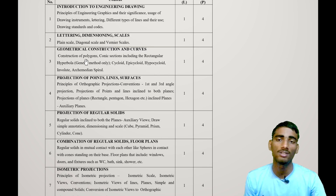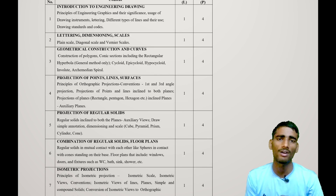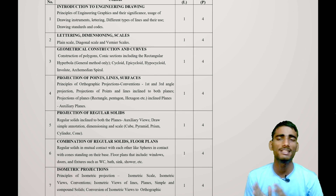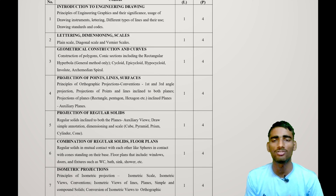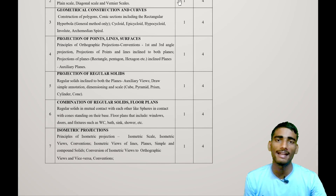Third is Geometrical Construction and Curves: construction of polygons, conic sections including the rectangular hyperbola, cycloid, epicycloid, and hypocycloid. You have to make these drawings using various geometrical instruments. I will also provide a video about what important instruments are required for that.